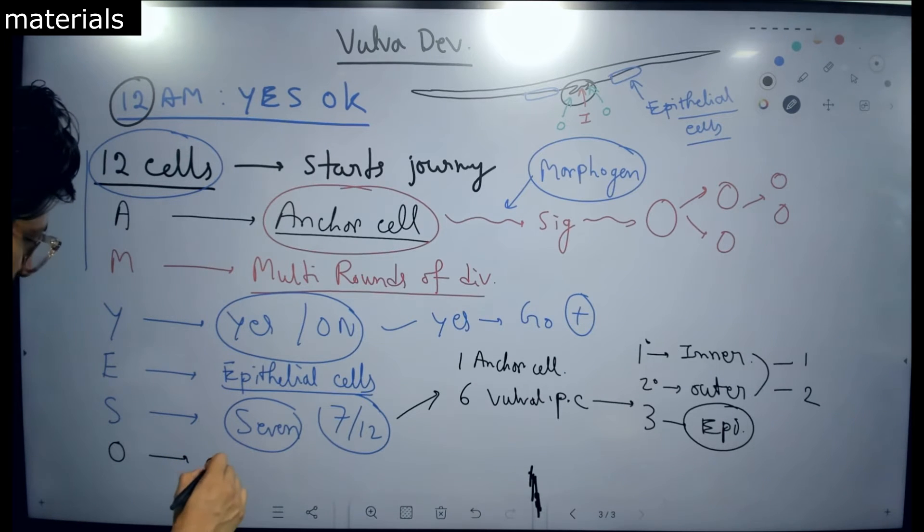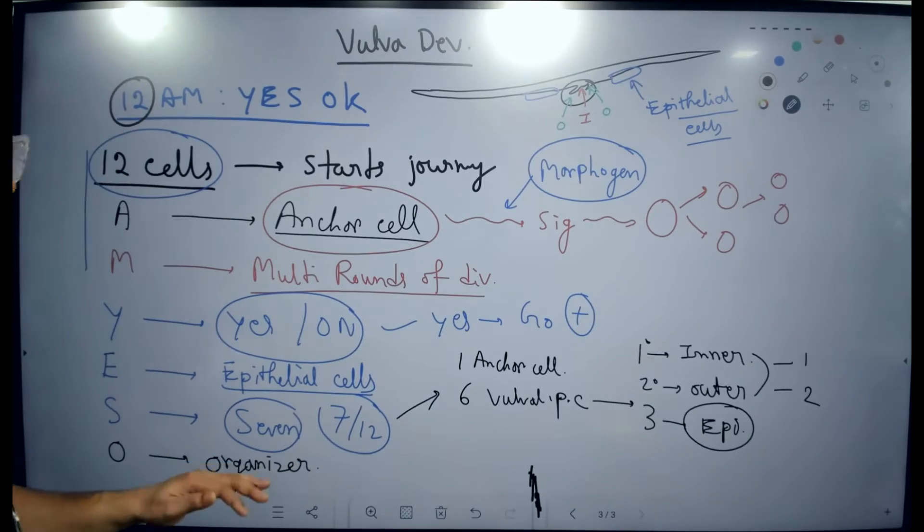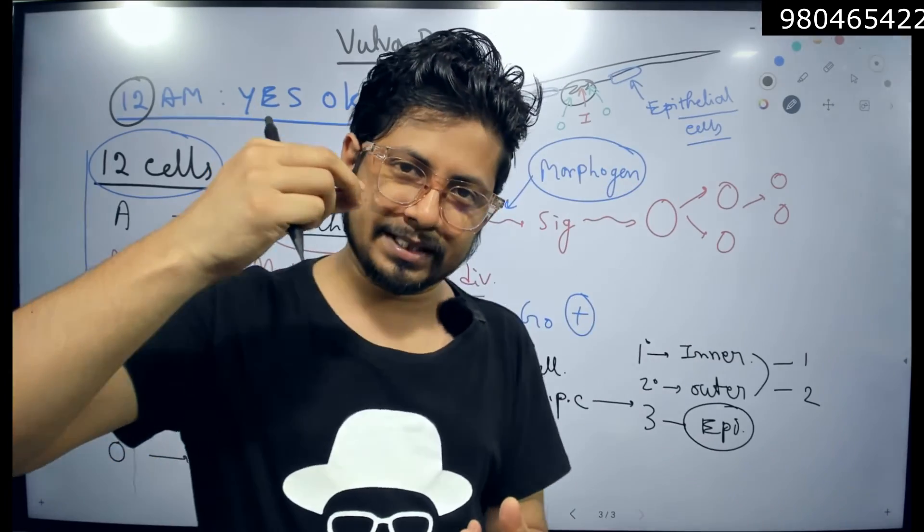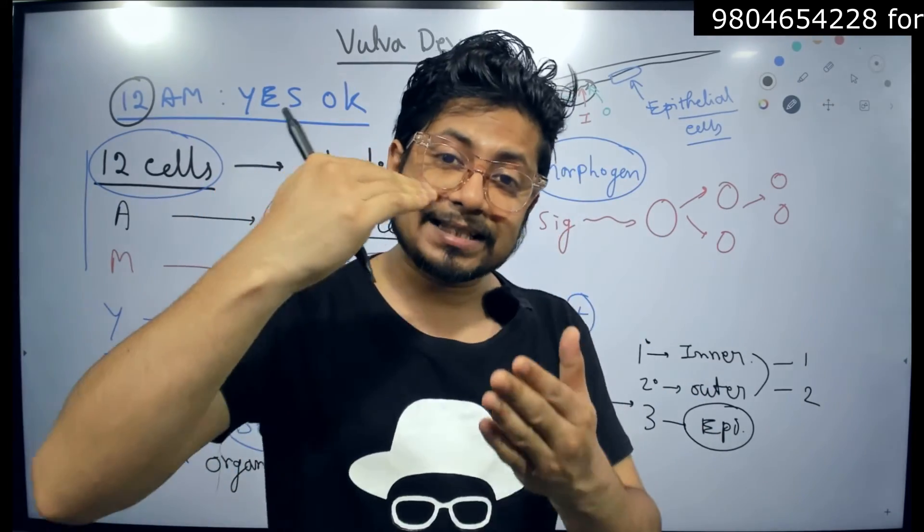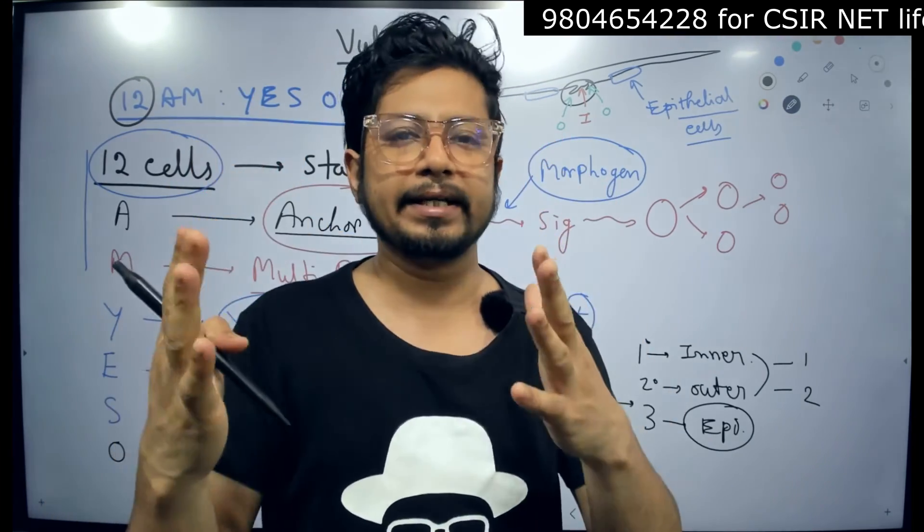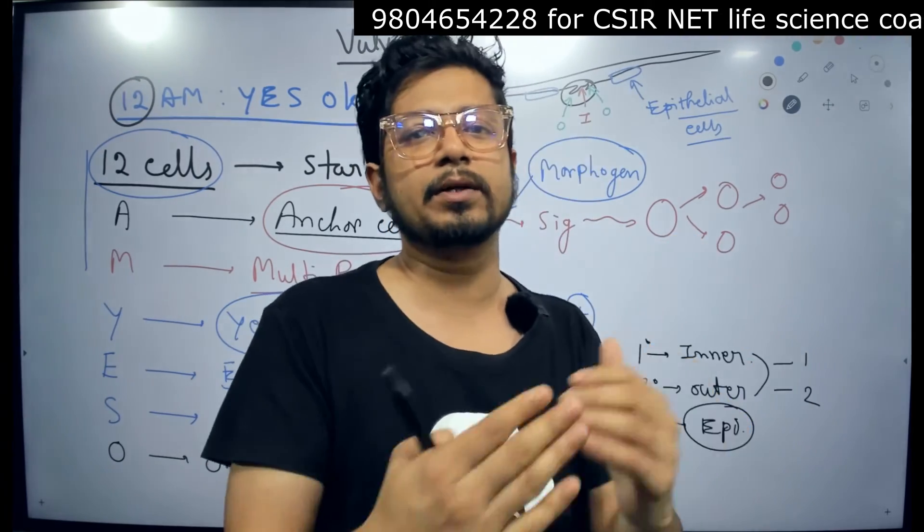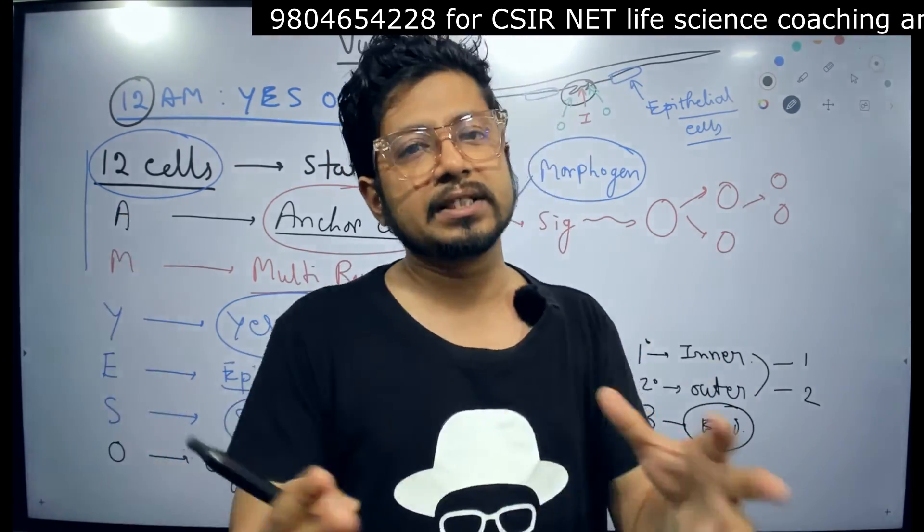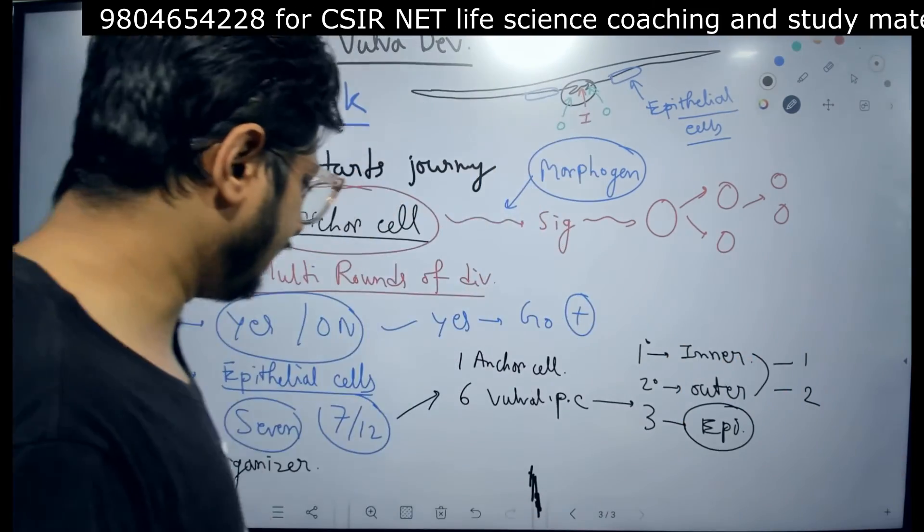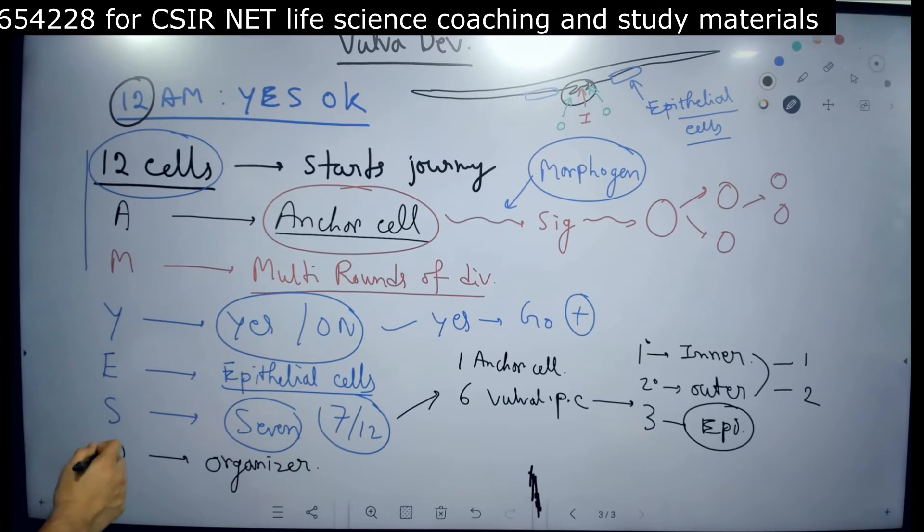O for organizer. Organizer concept is very important here in the vulva development of C. elegans because organizer means when a particular signaling molecule released, it acts as a gradient mediated fashion. Means at a particular higher gradient, it should have a different impact on that same cell. With a lower concentration, it will have a different impact on that same cell. So with changing gradient, the impact on which the signaling molecule is working will alter itself or change itself.